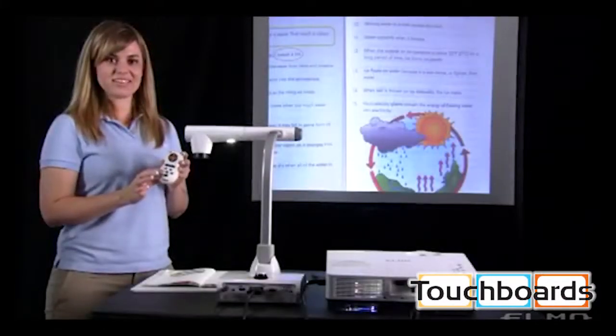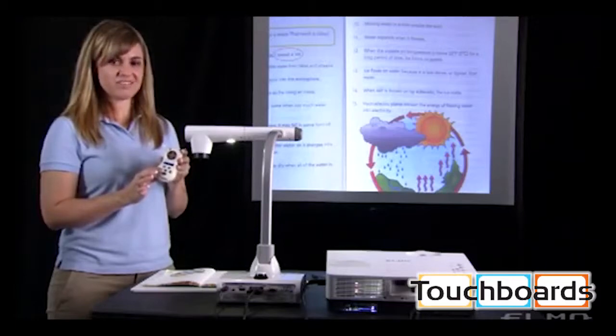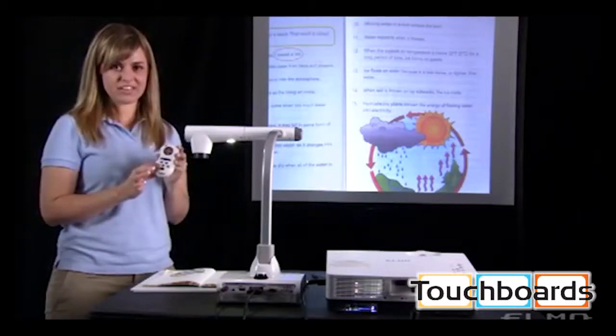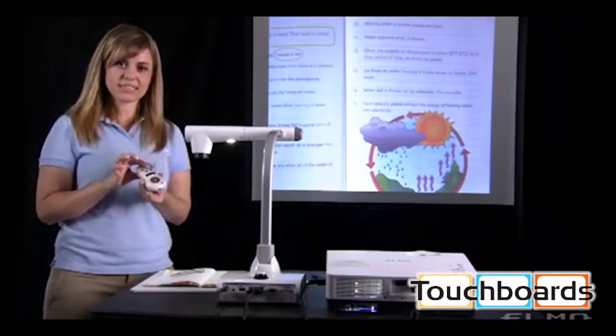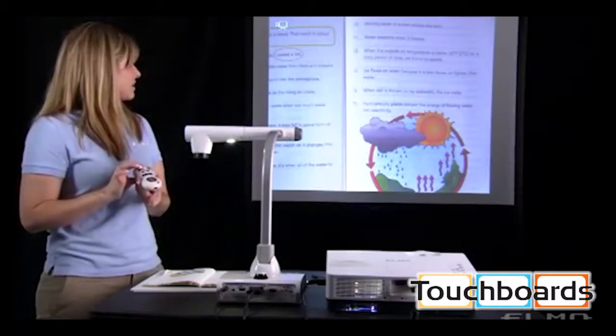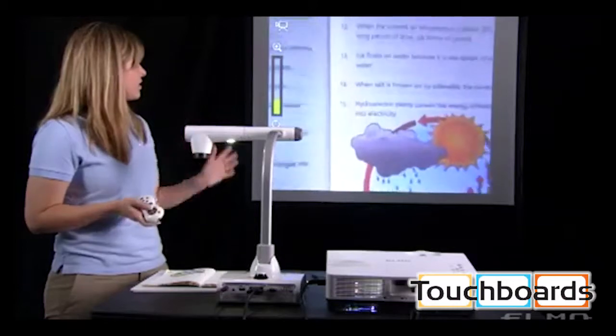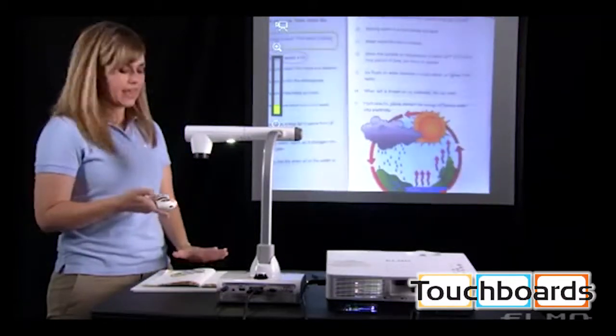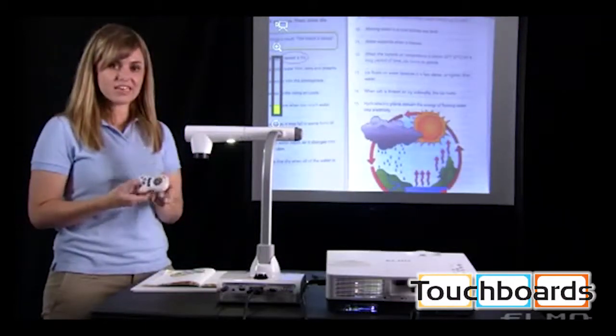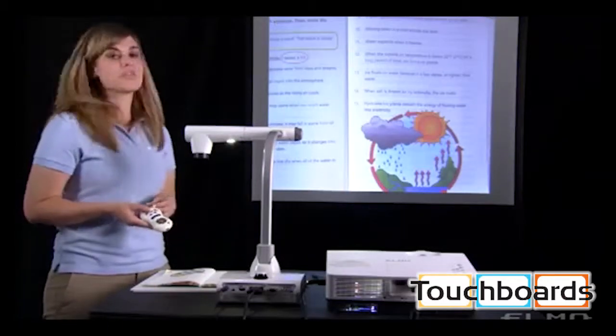The next button here will let you record video to the SD card or the USB flash drive. You'll just press this button and it will start recording video. You can then zoom in, zoom out, and press the video button again to stop the recording.